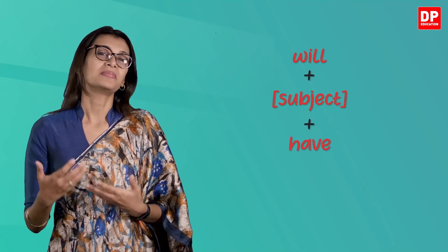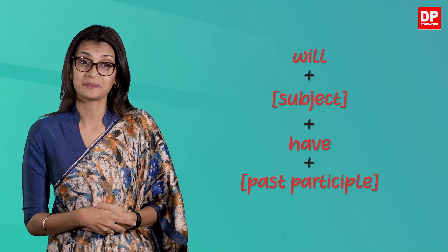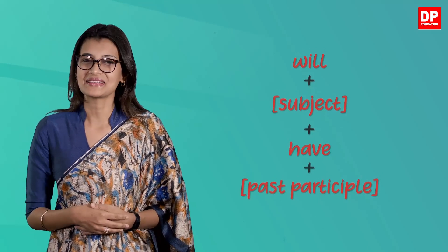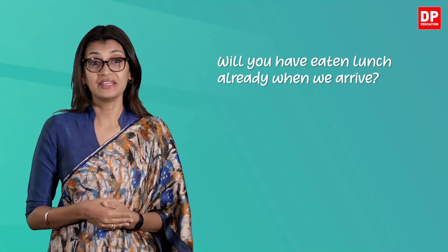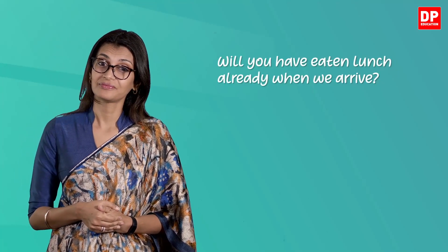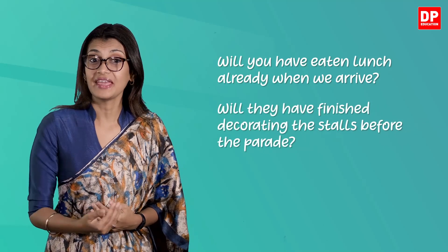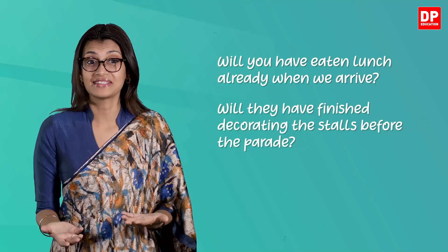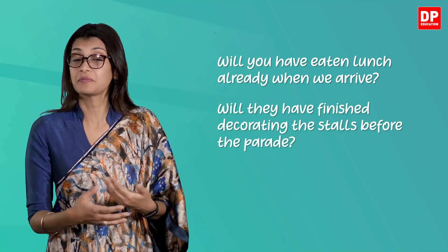So how do we formulate a question in the future perfect tense? The formula for asking a question in the future perfect tense is: will plus subject plus have plus past participle. Let's look at some examples: 'Will you have eaten lunch already when we arrive?' 'Will they have finished decorating the stalls before the parade?'